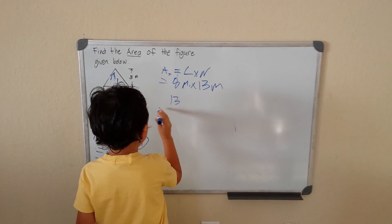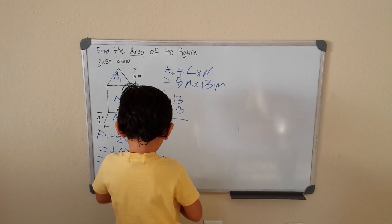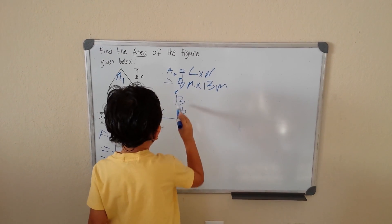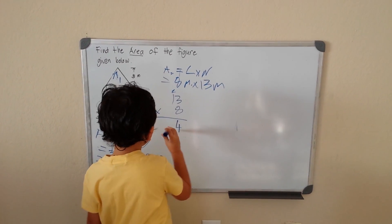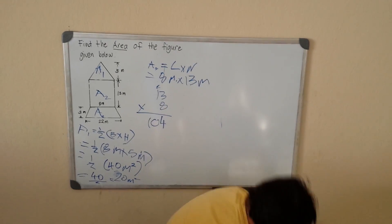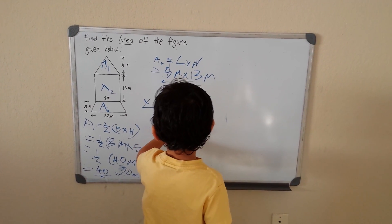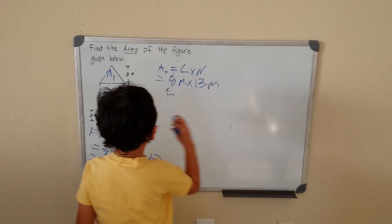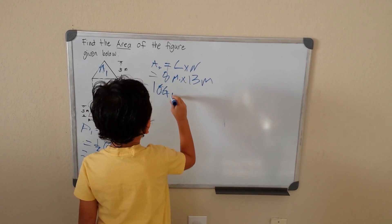13 times 8 equals 8 times 3 is 24, carry the 2. 8 times 1 is 8 plus 2 is 10. 104 meters squared.